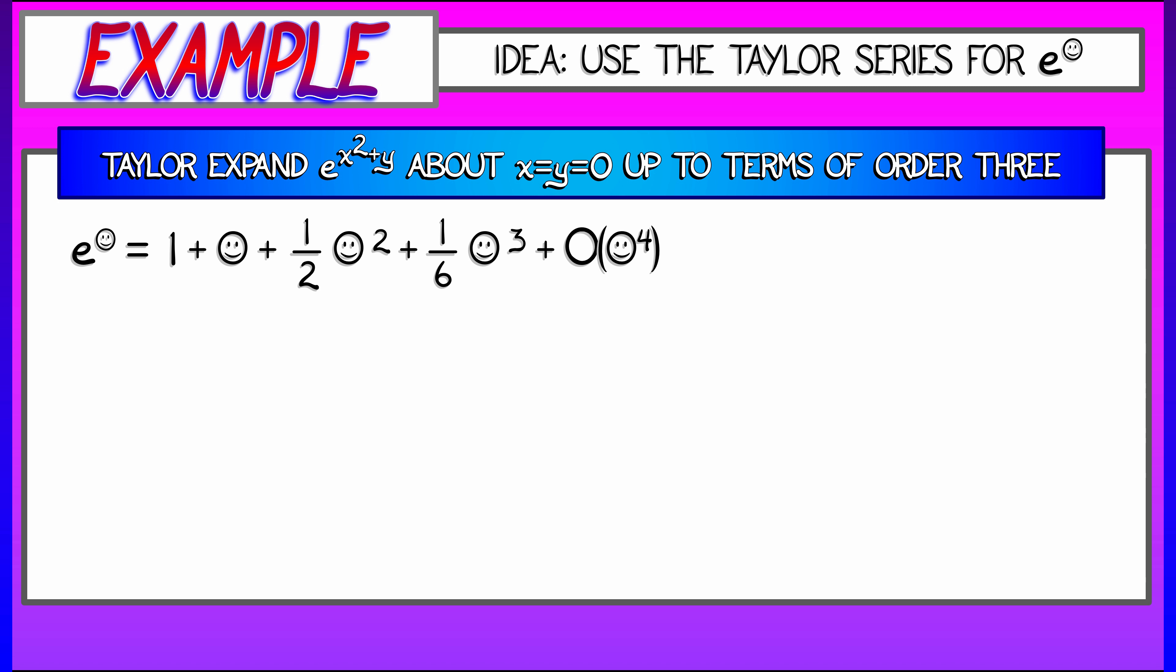If we just think back to the Taylor series for e to the smiley, it's 1 plus smiley plus smiley squared over 2 plus smiley cubed over 6, and then higher order terms, terms of fourth order and higher.